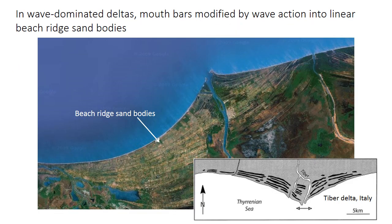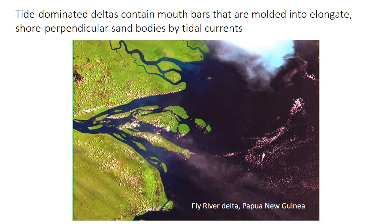Although rivers supply the sediment to deltas, the energy moving that sediment around can come from fluvial, wave, or tidal processes. In a wave-dominated delta, distributary mouth bars get heavily reworked into longshore-parallel sand ridges, so the delta plain deposits may look almost exactly like wave-dominated beach and shoreface sediment. You may need to consider the context provided by the overall facies succession — especially the presence of underlying pro-delta and delta front sediments — to recognize these as delta deposits. Likewise, in tide-dominated deltas, mouth bars can be reworked into shore-perpendicular elongated sand bodies by tidal currents. The delta plain may look similar to tidal flat or tidal-dominated estuary facies, with bidirectional cross-beds and inclined heterolithic stratification in the channels. Again, the context provided by the overall facies succession may be your best clue.